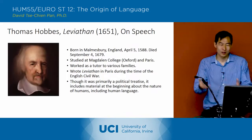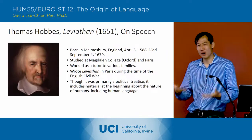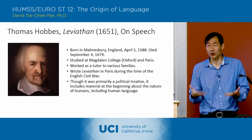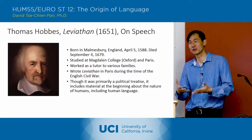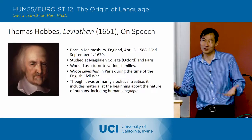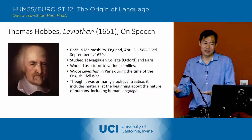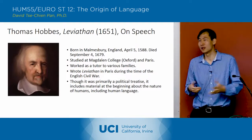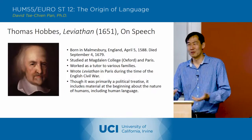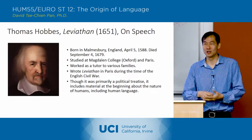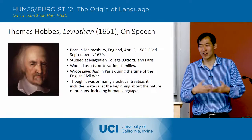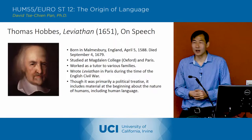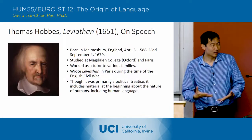Briefly about Hobbes: he was born in 1588, the year of the Spanish Armada — the huge fleet of ships built to attack England. The story goes that he was a premature baby because when his mother heard about this armada, she was so scared she gave birth then and there. He died in 1679. He studied at Magdalene College, part of what is today Oxford University, and in Paris he worked as a tutor to various families. Back then there was no mass public education, so rich families would hire tutors to educate their children — that's how many writers and philosophers gained their living, and that's what Hobbes did for much of his life. He started out studying law but continued as a tutor.